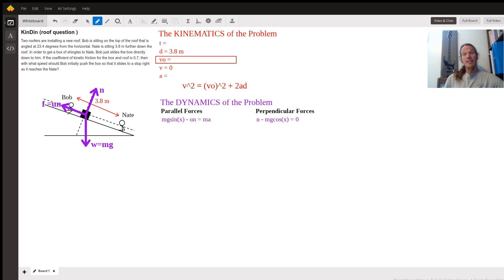Now this problem happens to be a kinematics problem at heart because the goal of the problem, what we're trying to find, is how fast this box is moving when Bob lets go of it. So since it deals with the motion of the box, this is a kinematics problem.